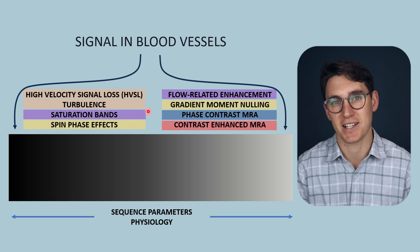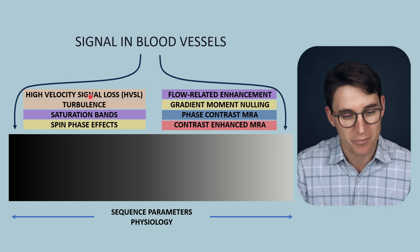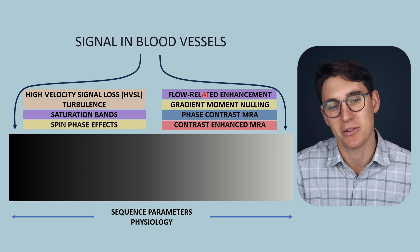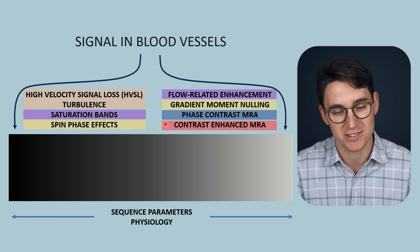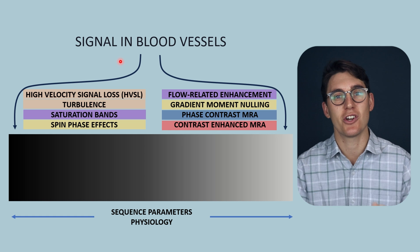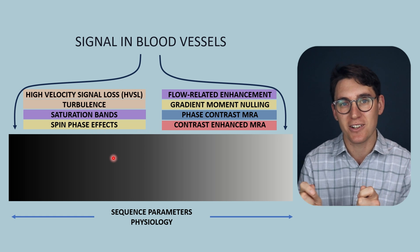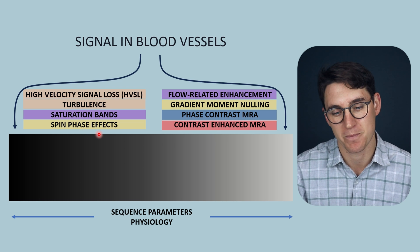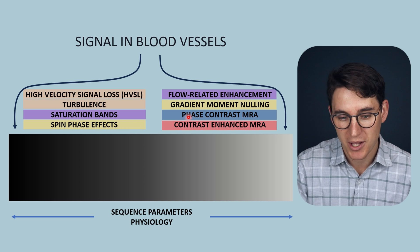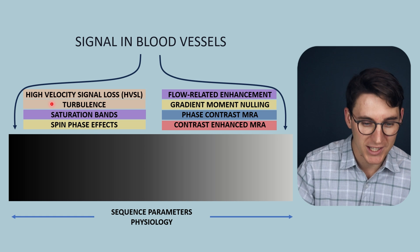We're going to start with what's known as time of flight effects — effects when tissue moves into or out of the slice while we're imaging — and we'll start today with a time of flight effect known as high velocity signal loss, paired with turbulence, which is another high velocity state that causes signal loss. Then we'll move on to flow related enhancement, which causes brightness in vessels, paired with saturation bands. We'll then cover spin phase effects and gradient moment nulling, which reverses those effects. Finally we'll wrap up with phase contrast MRI angiography and contrast enhanced MRI. We're going to start today with high velocity signal loss and turbulence.